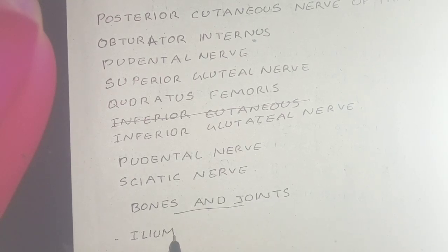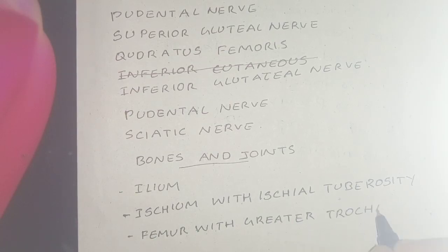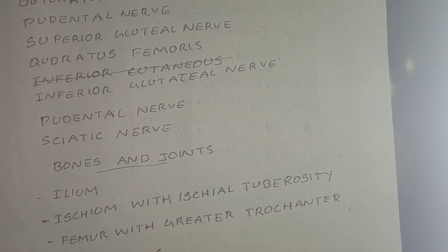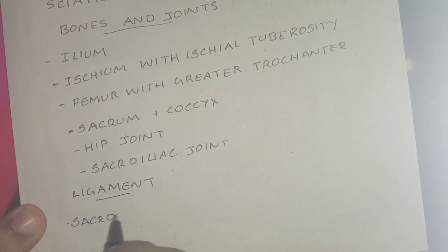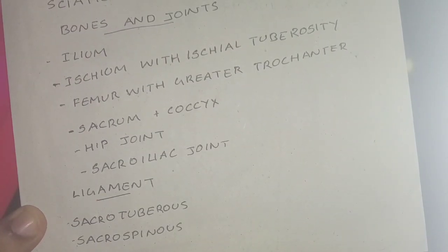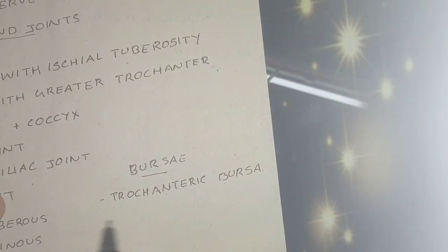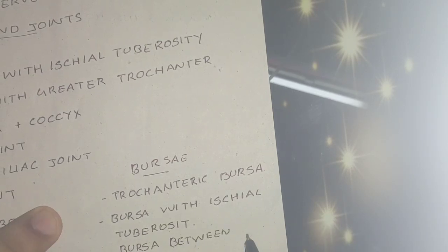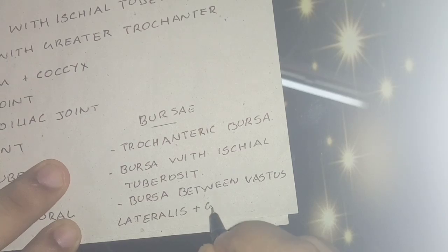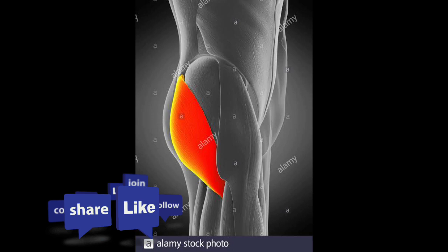The remaining structures can be remembered easily without a mnemonic. Bones and joints include ilium plus ischium with ischial tuberosity, femur with greater trochanter, sacrum plus coccyx, hip joint, and sacroiliac joint. Ligaments include sacrotuberous, sacrospinous, and ischiofemoral ligaments. Bursae include trochanteric bursa, bursa at the ischial tuberosity, and bursa between vastus lateralis and gluteus maximus.